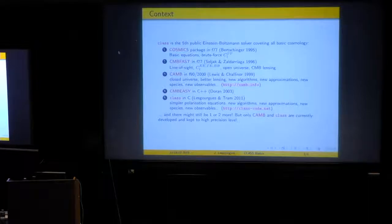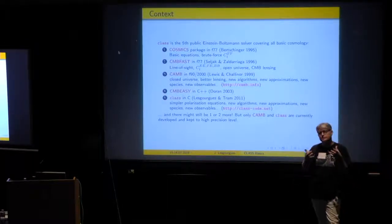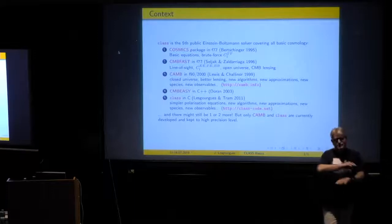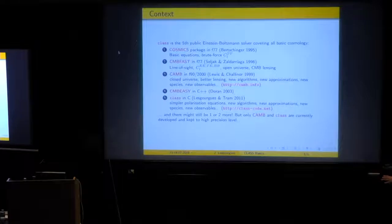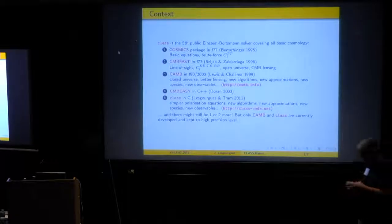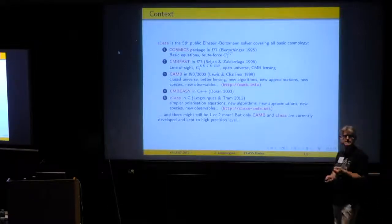So CMBfast became kind of a bit messy, there was some need to clean it up. And this was done by Anthony Lewis and Anthony Challinor. Anthony Lazenby was also taking part in 1999 with the release of CAMB. So CAMB was still partially based on CMBfast. It was taking some bricks, some blocks from CMBfast, and it was arranging them differently. And using the features of Fortran 90. It was not completely independent, it was mainly a restructuring of CMBfast.